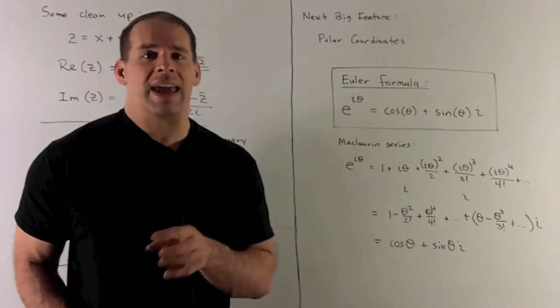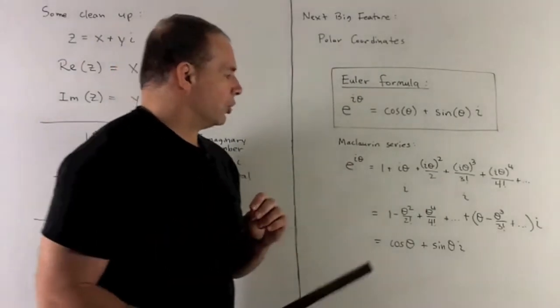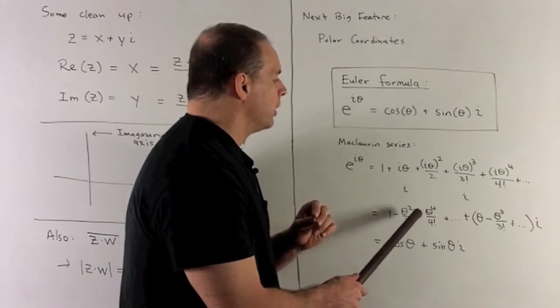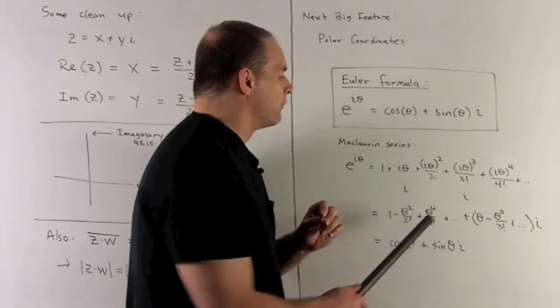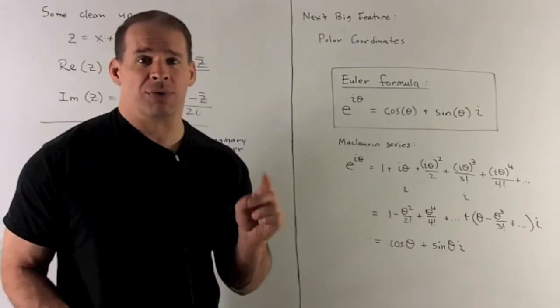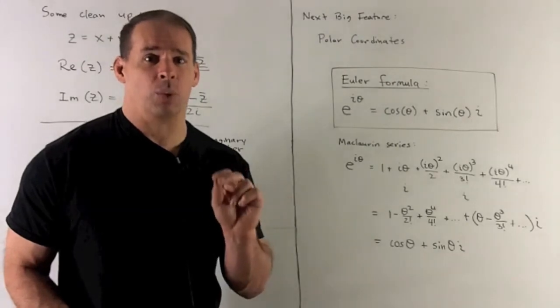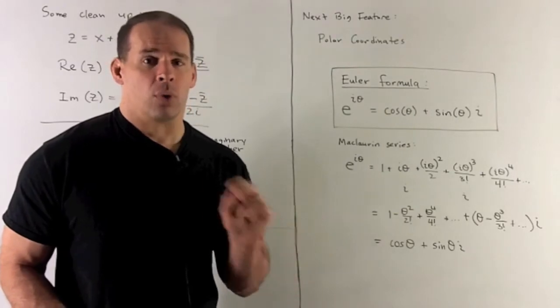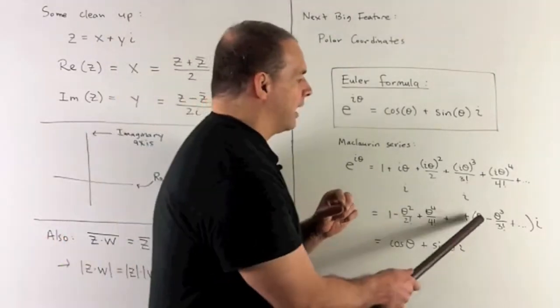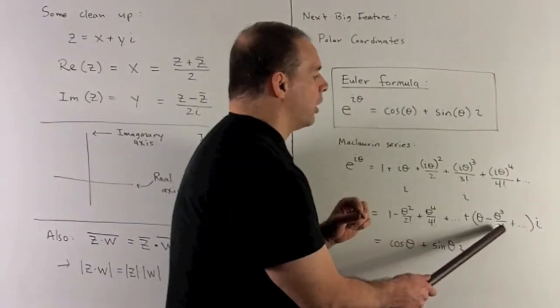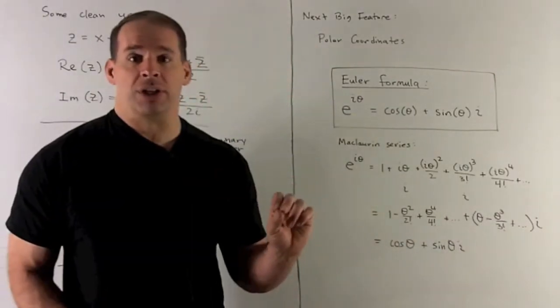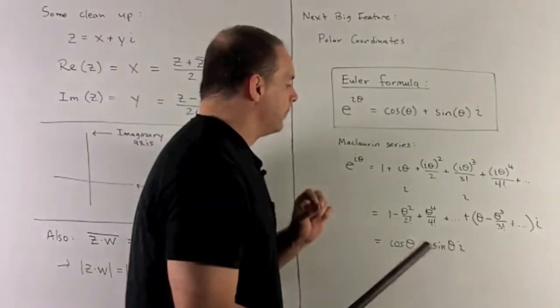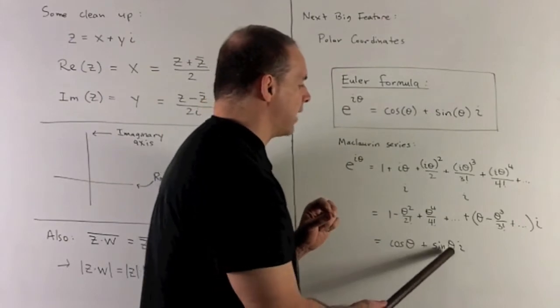For those first five terms, let's collect the terms with an I and without an I. You'll notice for the ones without an I, we get 1 minus theta squared over 2 factorial plus theta to the 4 over 4 factorial. And you see that the McLaren series for cosine is starting to develop. And it actually will give us the McLaren series for cosine if we take it all the way out. For the terms with an I in them, we're going to get theta minus theta cubed over 3 factorial. And then you'll see the McLaren series for sine develop. So we're going to have that times an I. So what we're going to get, it's going to be cosine theta plus sine theta times I.